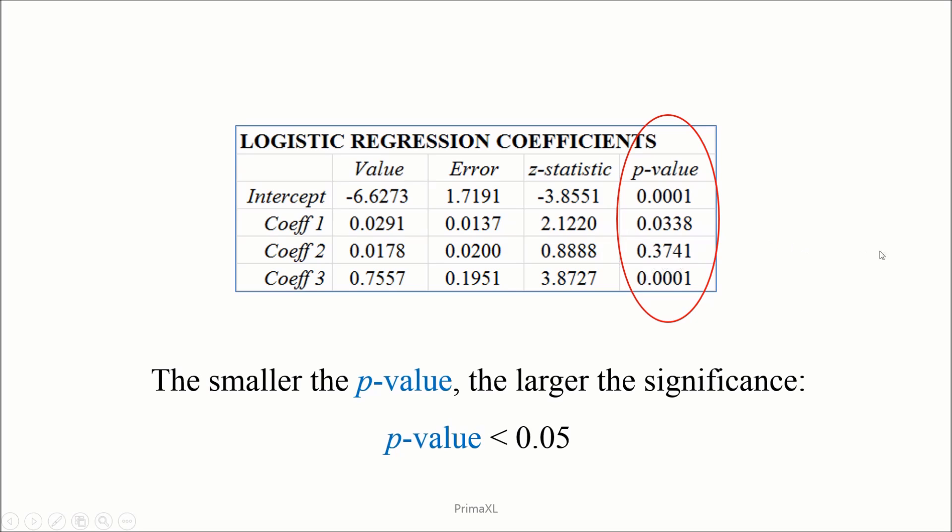The associated variable is x2. Thus, we may interpret that the score of test 2 does not help in understanding the admission decision.